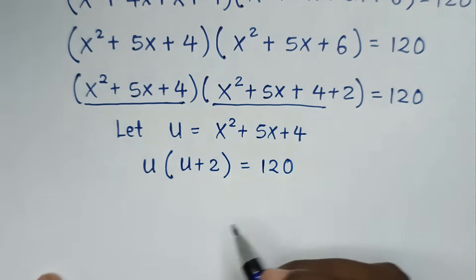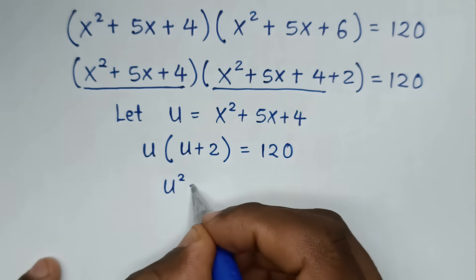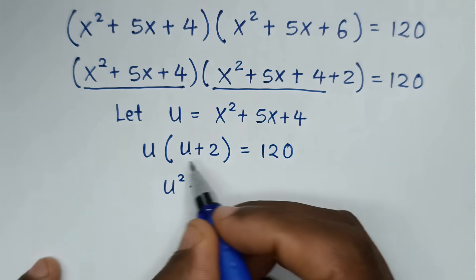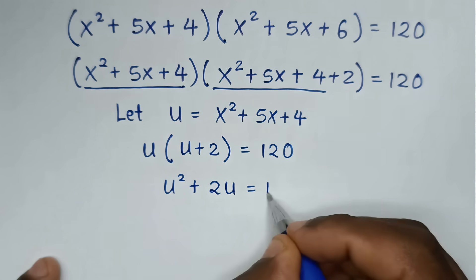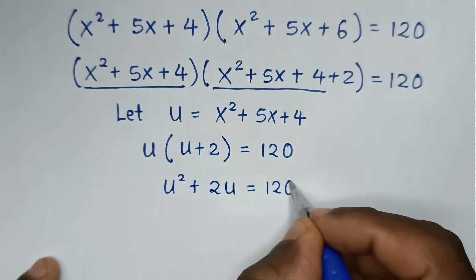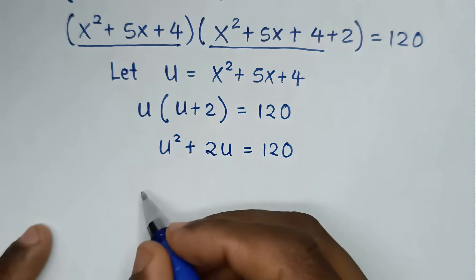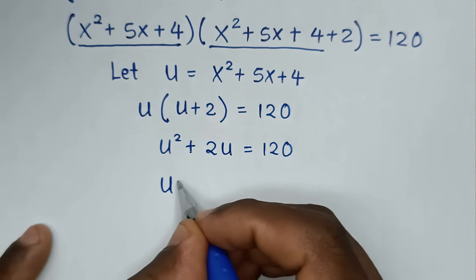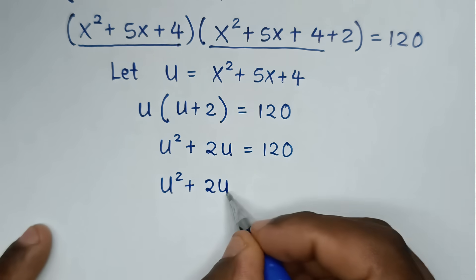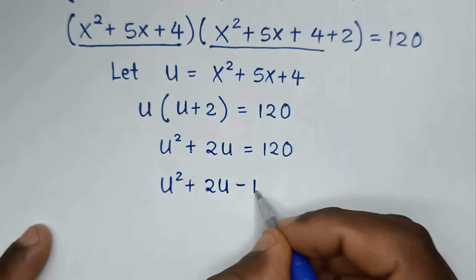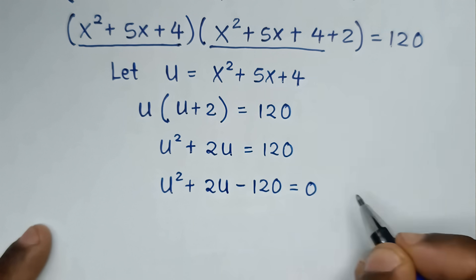Expanding u(u+2), we get u² + 2u = 120. Moving 120 to the left side gives us u² + 2u - 120 = 0.